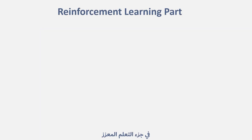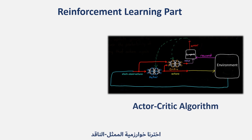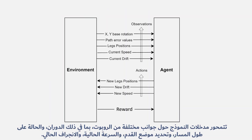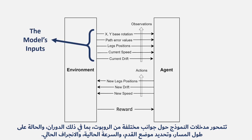In the reinforcement learning part, we chose the actor-critic algorithm and the Gymnasium library from OpenAI to train the robot in the environment. The model's inputs are centered around various aspects of the robot, including rotation, the state along the path, feet positioning, current speed, and current drift.